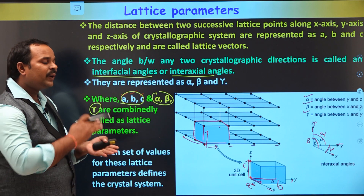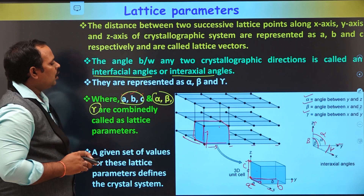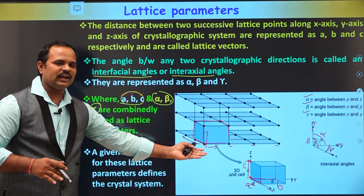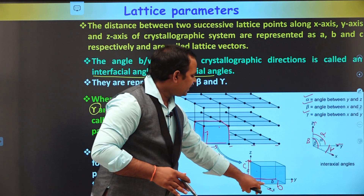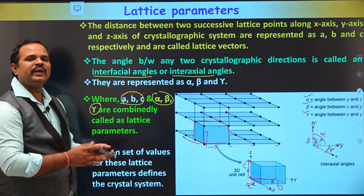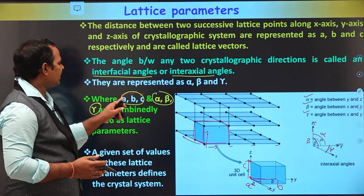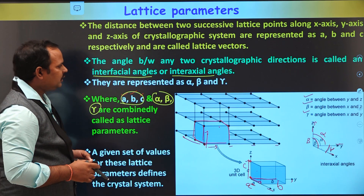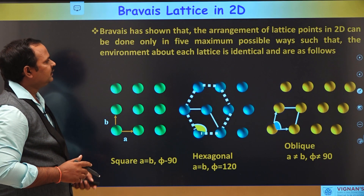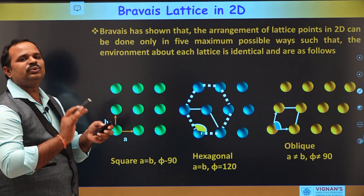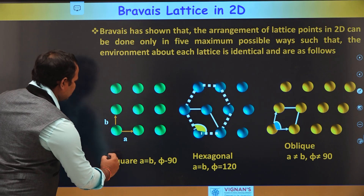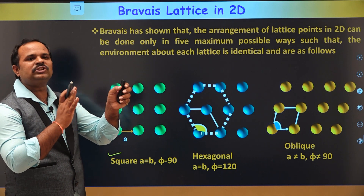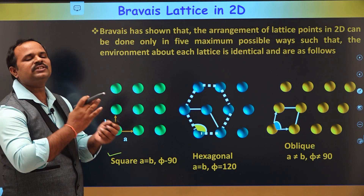By varying these values, we get different lattices. So how many different ways can we arrange the lattice points in space by varying A, B, C and the angles alpha, beta, gamma? It is very difficult to imagine. However, Bravais has shown that in two dimensions, there are only five possible ways to arrange points in space. The first is square.